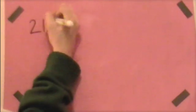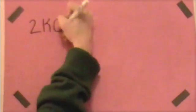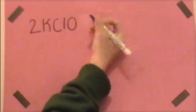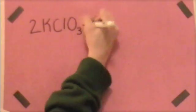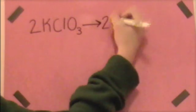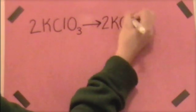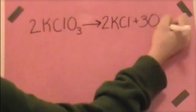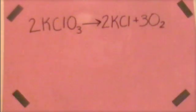Let's try this equation here. 2 KClO3 yields 2 KCl and 3 O2. This equation is balanced. So how many moles of oxygen are produced by the decomposition of 6 moles of potassium chlorate?